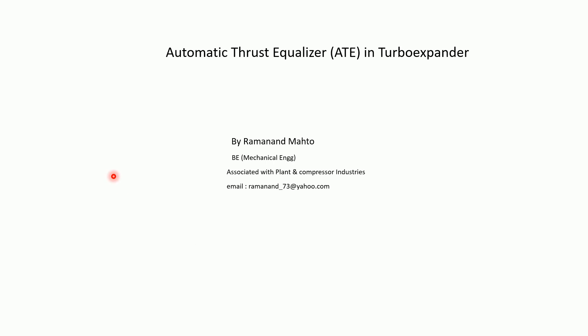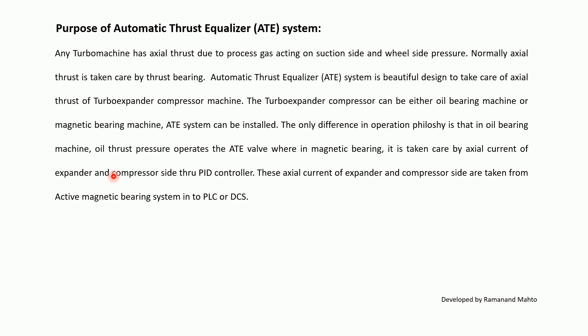The Automatic Thrust Equalizer, also called ATE, is used in turbo expanders. The purpose of the ATE system is to address axial thrust that exists in any turbo machinery due to process gas acting on the suction side and wheel side pressure. Normally, axial thrust is taken care of by the thrust bearing. The ATE system is a well-designed solution to manage the axial thrust of a turbo expander compressor machine.